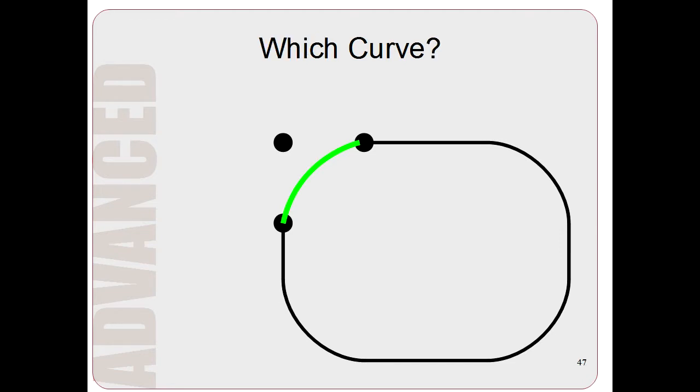But which curve will it draw? Why did it draw this curve, instead of this curve, or maybe this curve? Aren't they all curves? How does the computer decide to draw this particular curve?